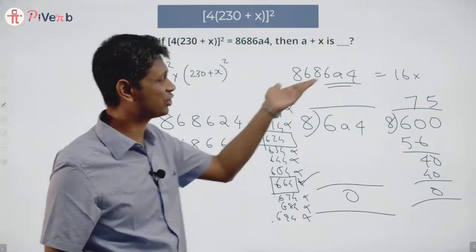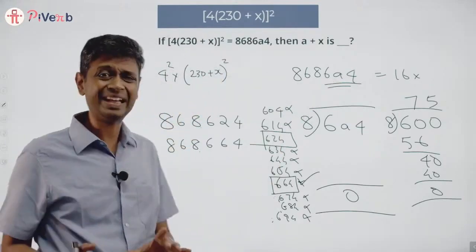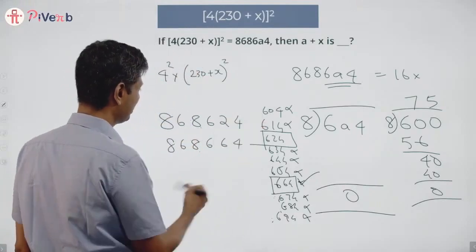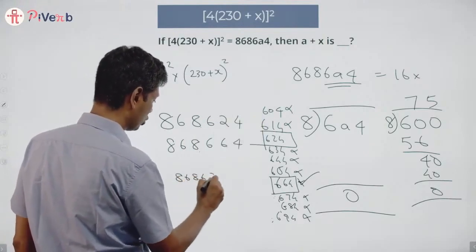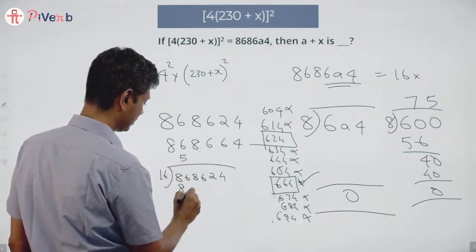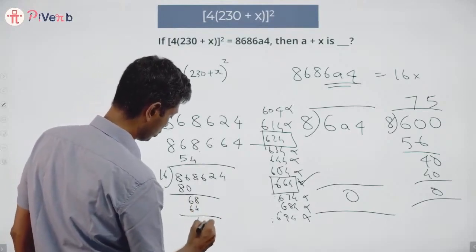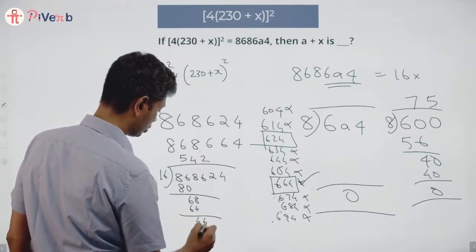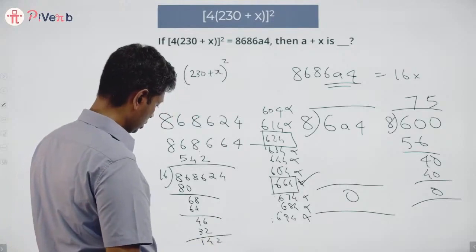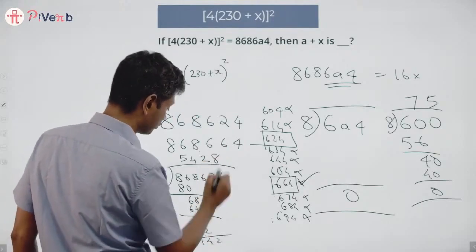I thought about them being multiples of 16, so I can divide this by 16 and get that remaining part. I'm going to take 868624 divided by 16. 16 times 5 is 80, 68, 16 times 4 is 64, 46, 16 times 2 is 32.